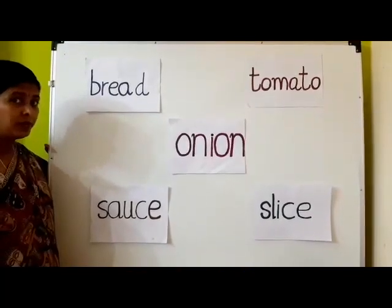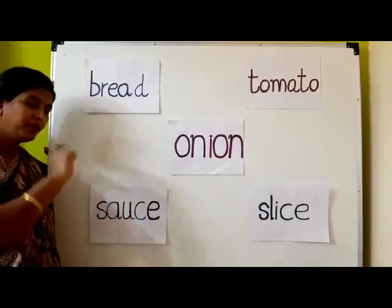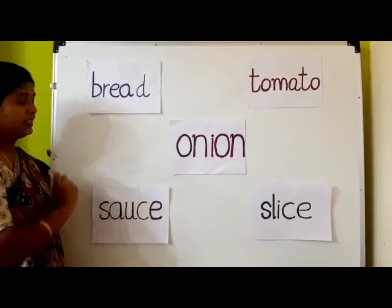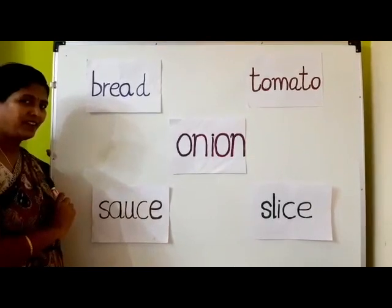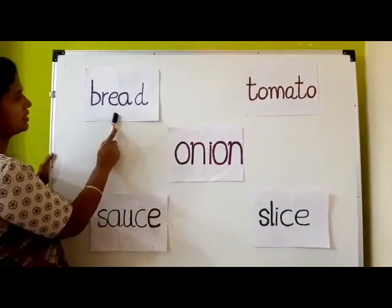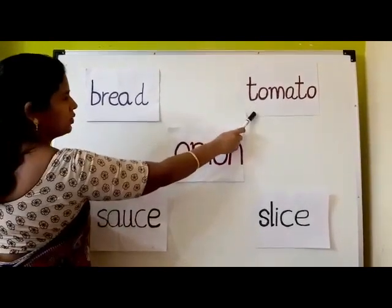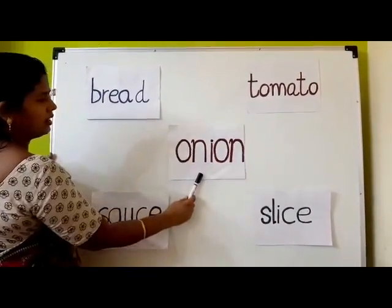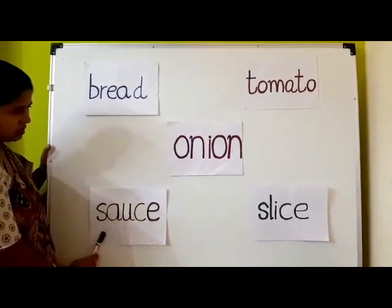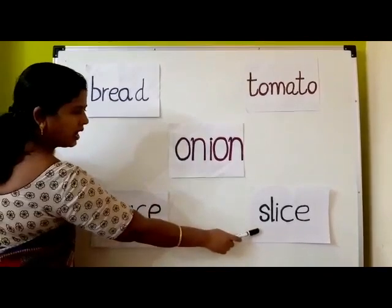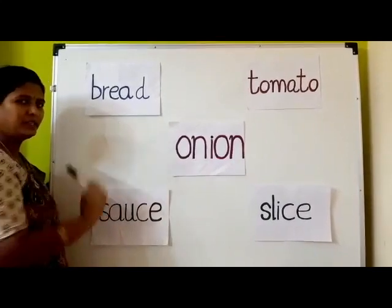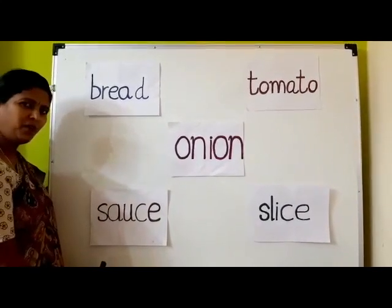Children, what are the spellings we learnt in our previous class? Do you remember? Let us revise them once again. Now you see: bread, tomato, onion, sauce, slice. Right children? Now let us read these spellings in our poem.